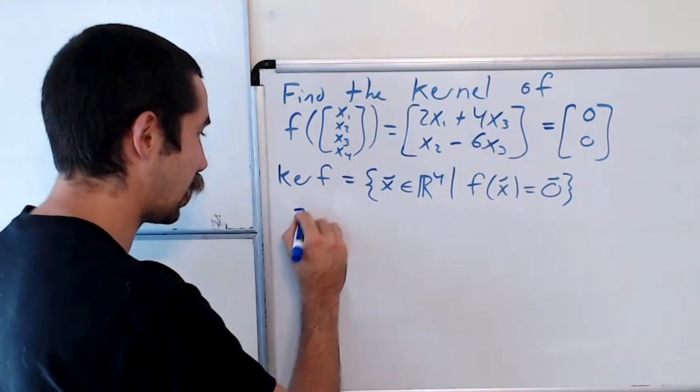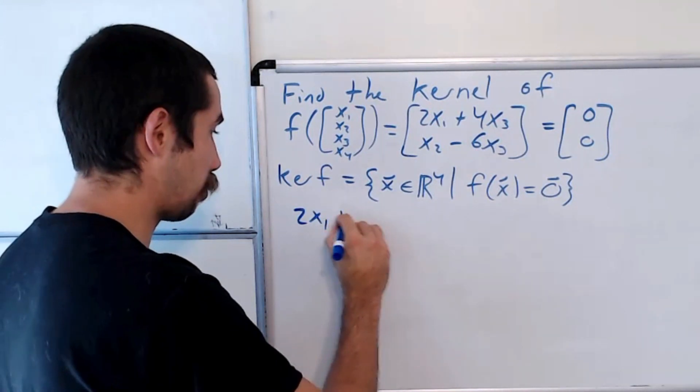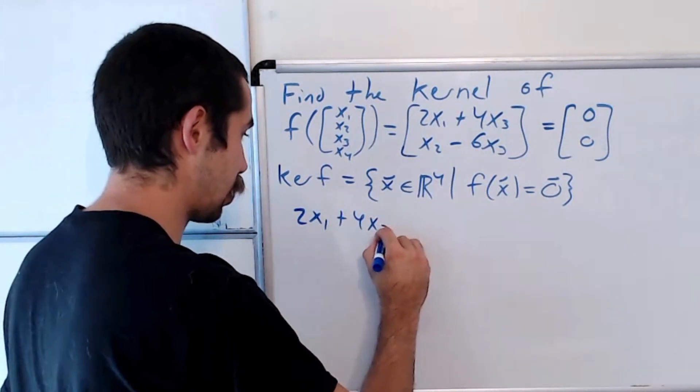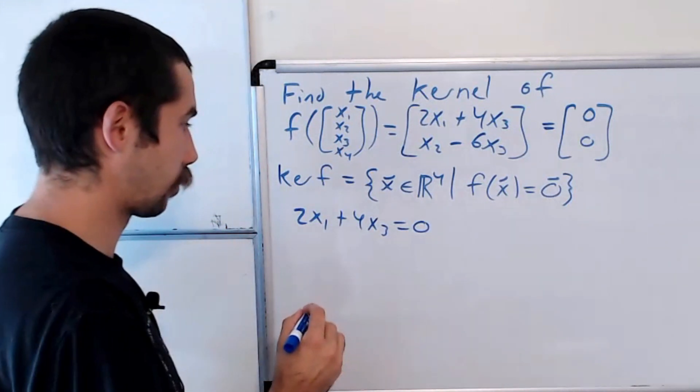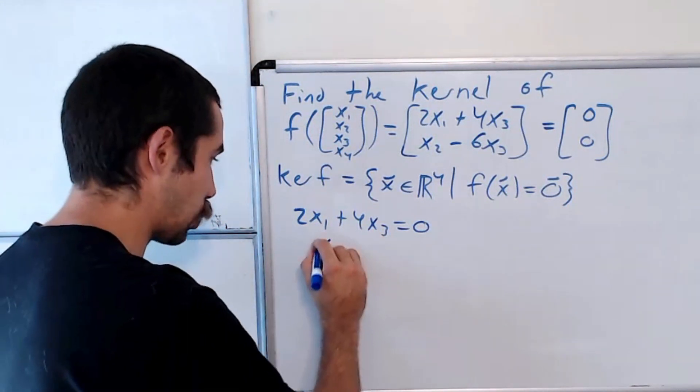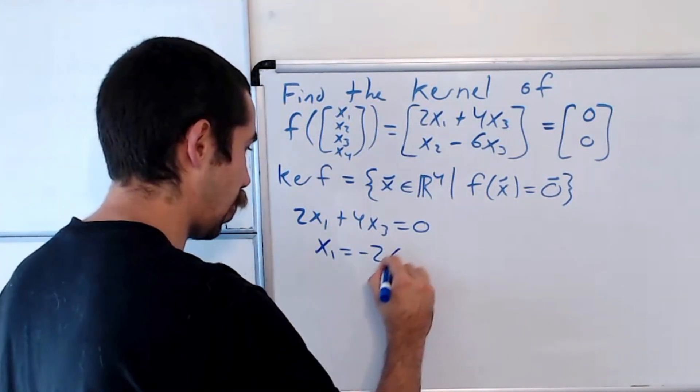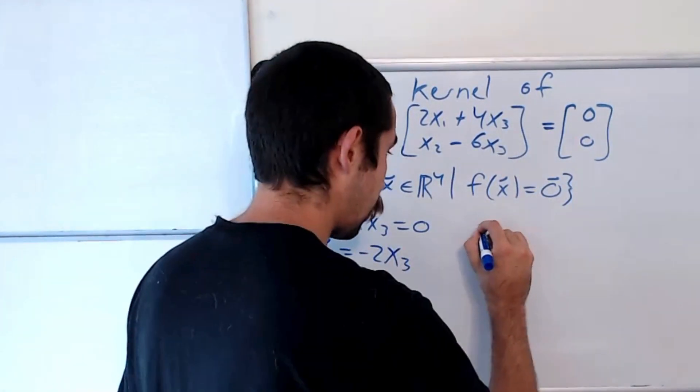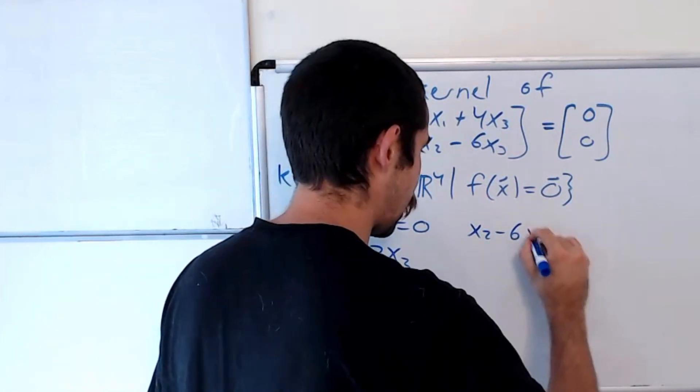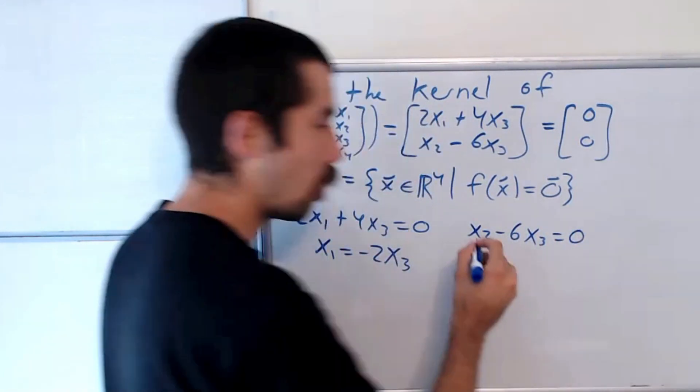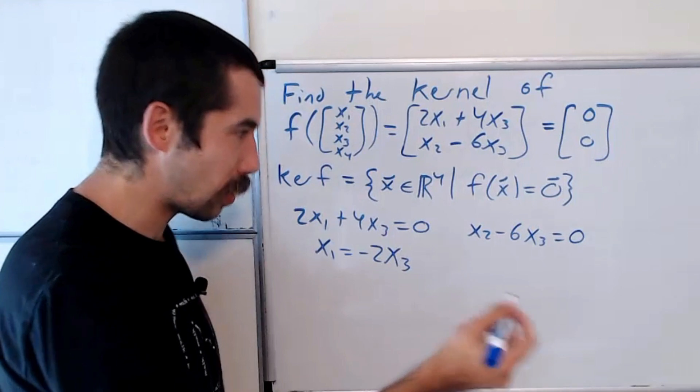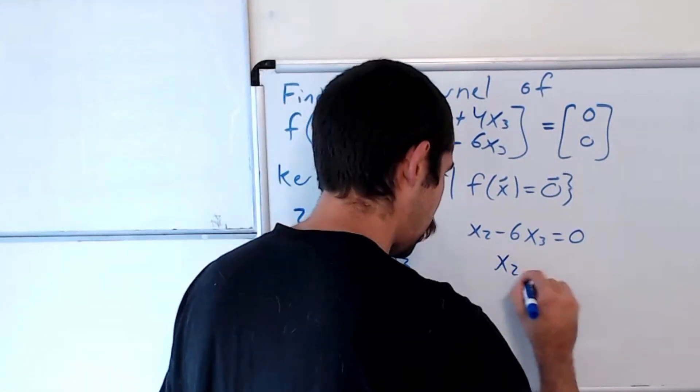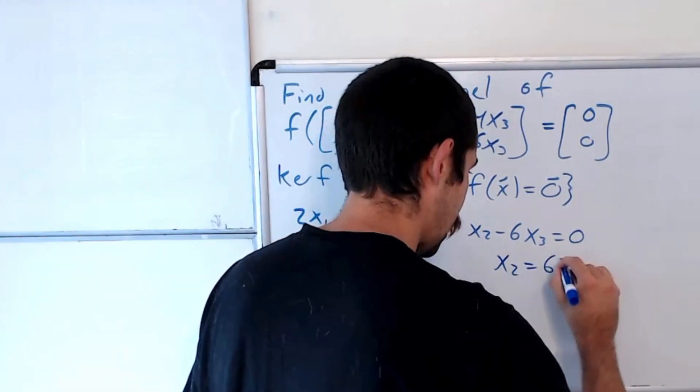So our first line would be 2x1 plus 4x3 equals 0, which we could solve and get x1 is equal to negative 2x3. And then our next equation would be x2 minus 6x3 equals 0, which we could solve for x2 in terms of x3. So we have x2 is equal to 6x3.